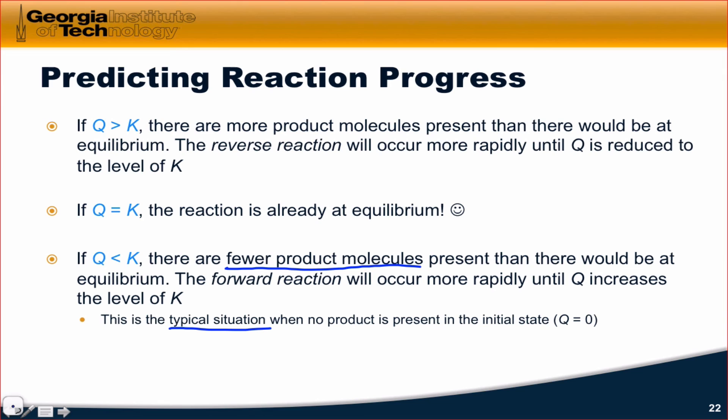It may not make a lot of sense that we'll have to deal with situations where there's some product already present, but as we'll see in applications of equilibrium, there are some circumstances under which you can't really control what's in your reaction solution in the initial state. For example, when you're working with water, there's a guarantee that there's going to be some initial amount of hydroxide in there.